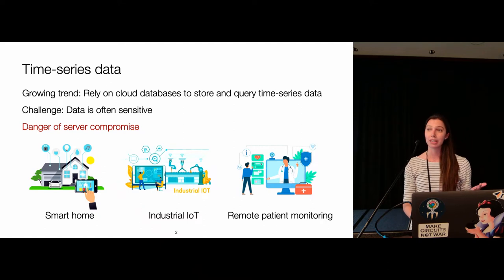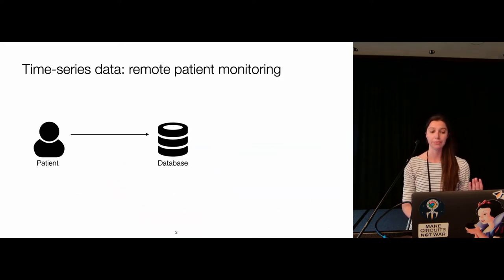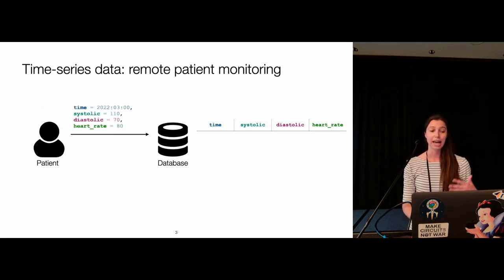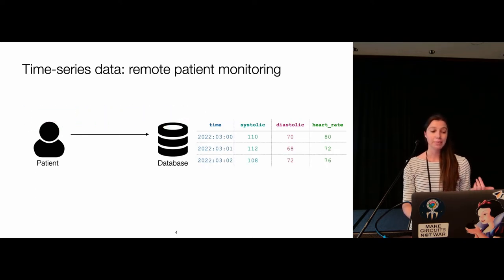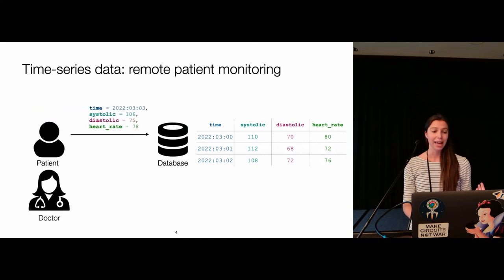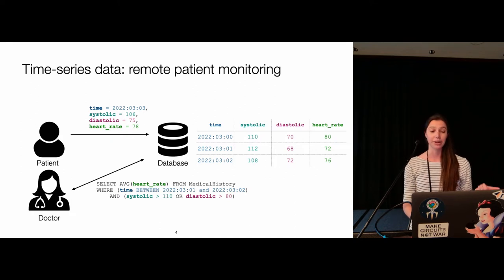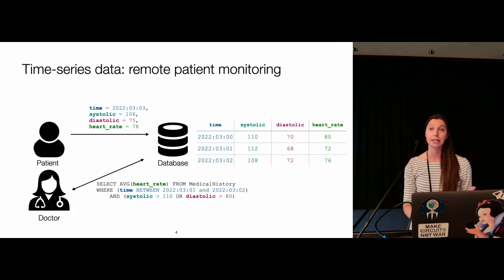To make this concrete, let's consider remote patient monitoring. A patient's database stores features like a timestamp, systolic and diastolic blood pressure measurements, and heart rate. Over time, the patient sends records to the database. A doctor might then query the average heart rate where the time is between some interval, systolic blood pressure is greater than 110, and diastolic is greater than 80 — a multi-predicate aggregation query.